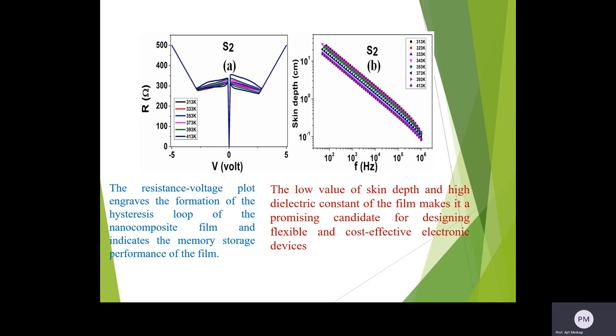The resistive voltage plot describes the formation of the hysteresis loop of the nanocomposite film and indicates the memory storage performance of the film. The low value of the screening depth and high dielectric constant of the film makes it a promising candidate for designing flexible and cost-effective electronic devices.